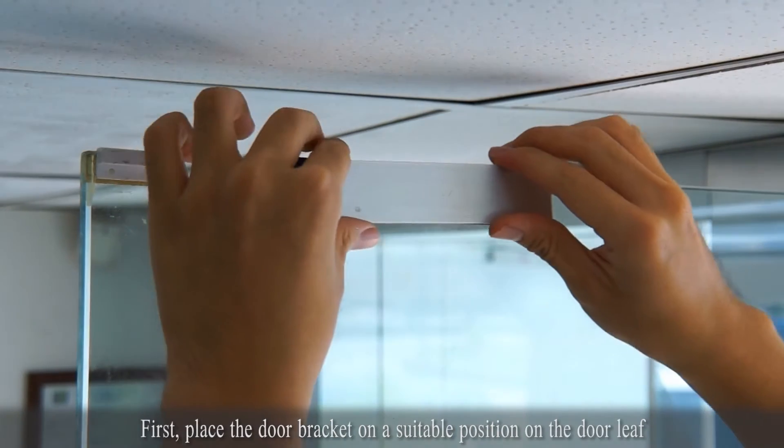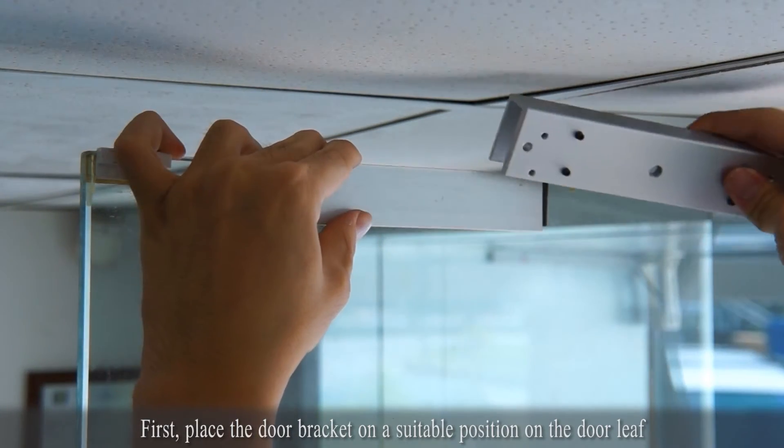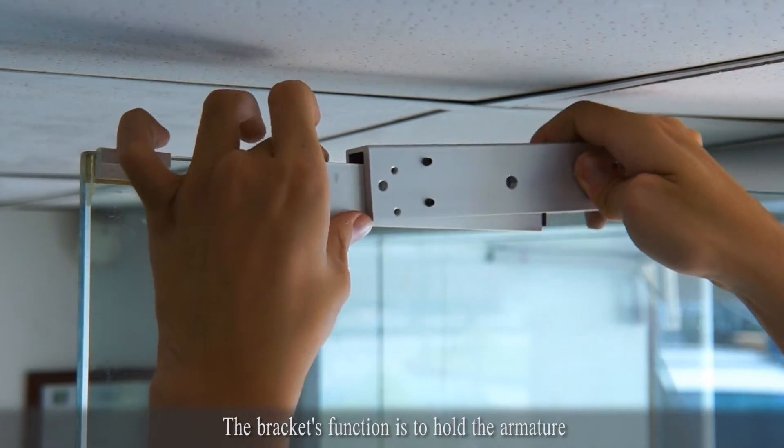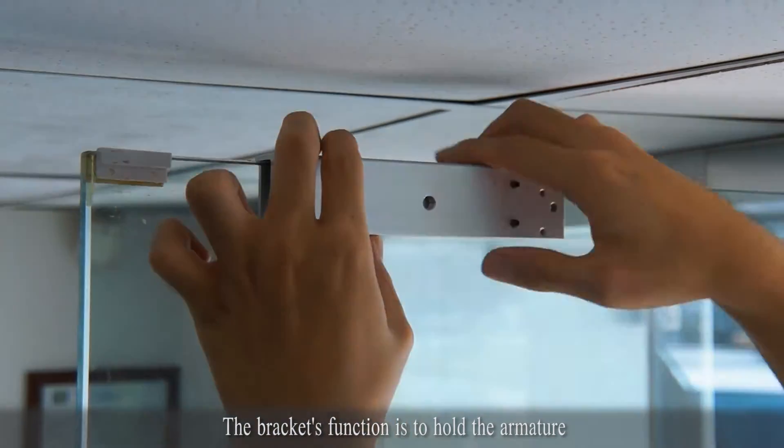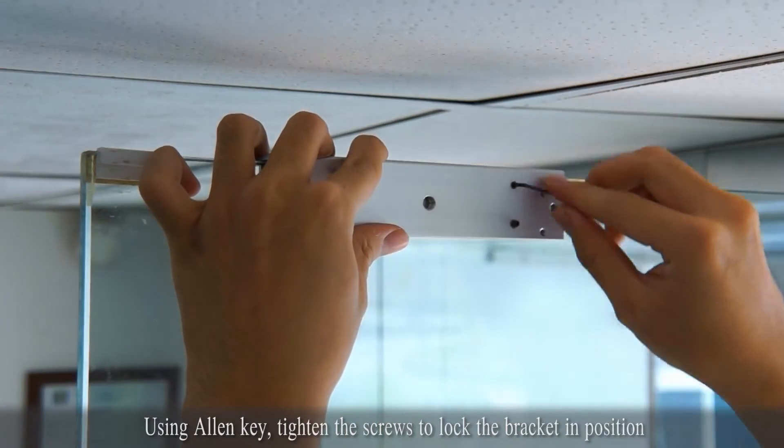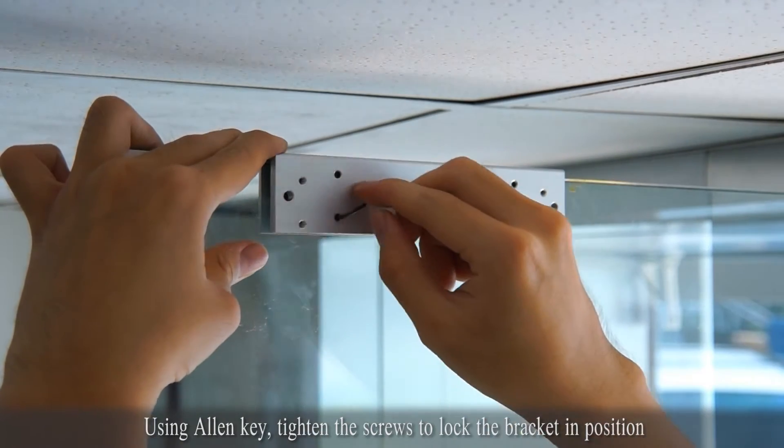First, place the door bracket on a suitable position on the door leaf. The bracket's function is to hold the armature. Using an Allen key, tighten the screws to lock the bracket in position.